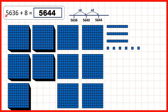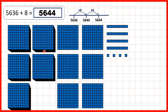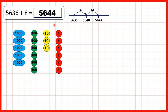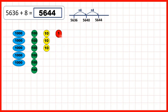Our next question was 5,636 plus 8, which we can see here. We can add 1, 2, 3, 4, exchange, then add 5, 6, 7, 8, and that gives us 5,644 as our answer. Or, using place value counters, we can add 1, 2, 3, 4, exchange, then add 5, 6, 7, 8, and we get 5,644.